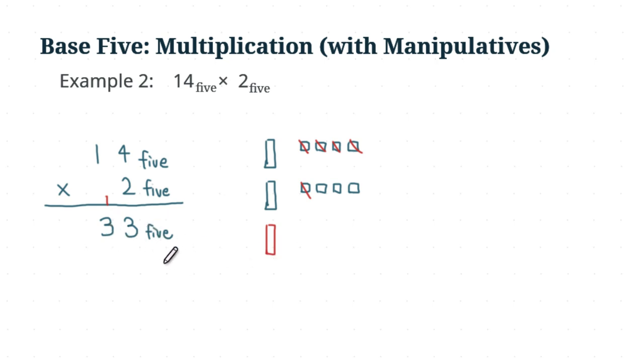As you can see here, we have three longs and three units. So 14 base 5 times 2 base 5 gives us 33 base 5. Those pieces agree with our answer, and we are going to do a more difficult example with more carrying next time. Thank you for watching.